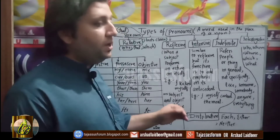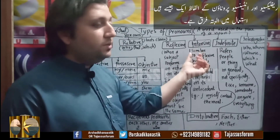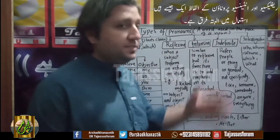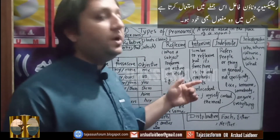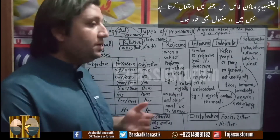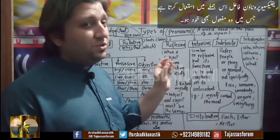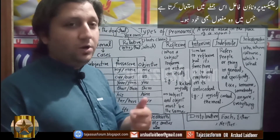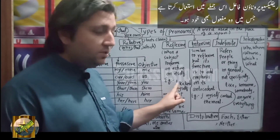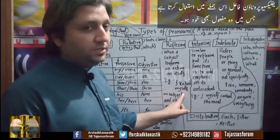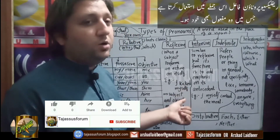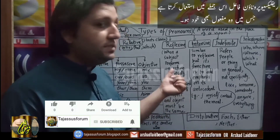The next kind of pronoun is reflexive pronoun, and after that there is intensive pronoun. There is a slight difference between reflexive and intensive pronoun. The words used are basically the same, but their function is different. A reflexive pronoun is used when a subject performs an action on itself — that is, the sentence has the same subject and object. For example: 'I kicked myself.' Here, 'I' is the subject, 'kick' is the verb, and 'myself' is the object. Both 'I' and 'myself' represent the same person. So 'myself' is a reflexive pronoun here.